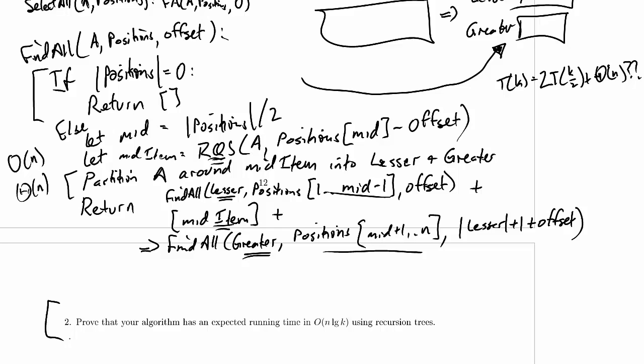Now we've developed an algorithm previously, and we're proving that the algorithm has the running time that we wanted, an expected running time in order n log k, using recursion trees. This is the algorithm that we're working on.